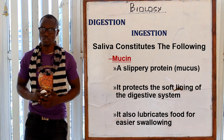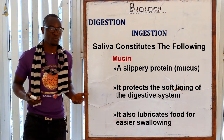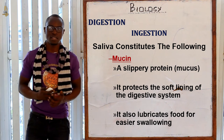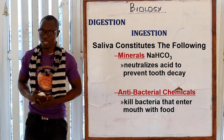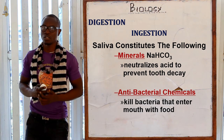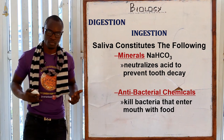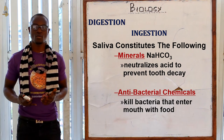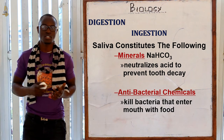Saliva also contains mucin, a slippery protein — most commonly referred to as mucus — which protects the soft lining of the digestive system and lubricates food for easier swallowing. Another constituent is minerals such as sodium hydrogen carbonate, which neutralizes acid taken into the mouth and prevents tooth decay by neutralizing acid from food. Saliva also contains antibacterial chemicals that kill bacteria entering the mouth through ingestion or contaminated food.